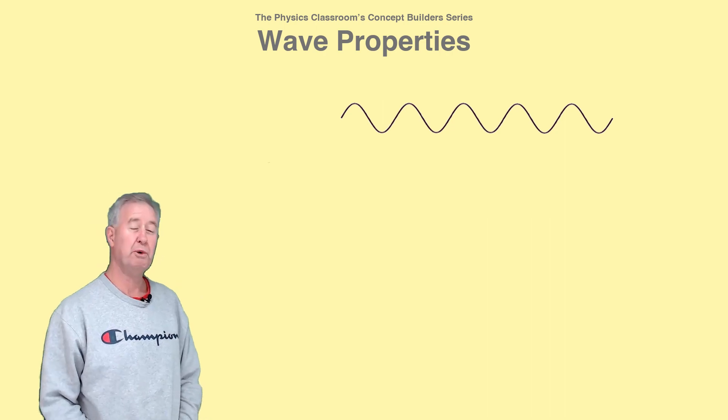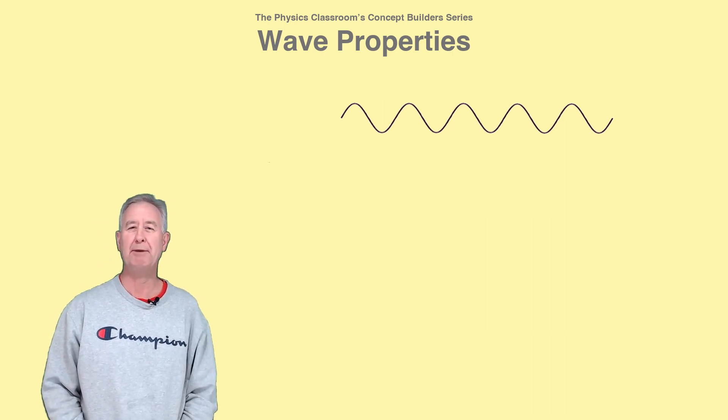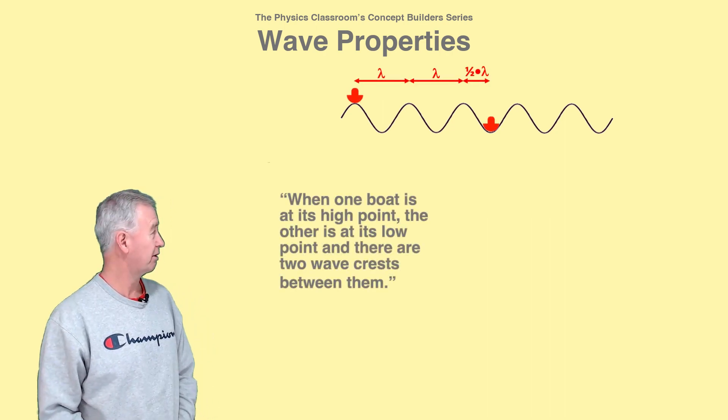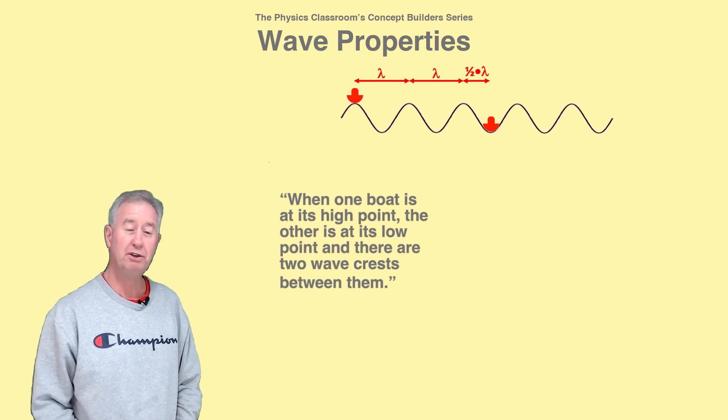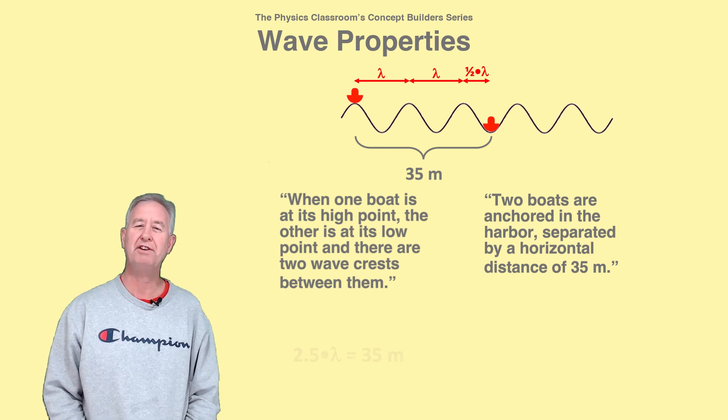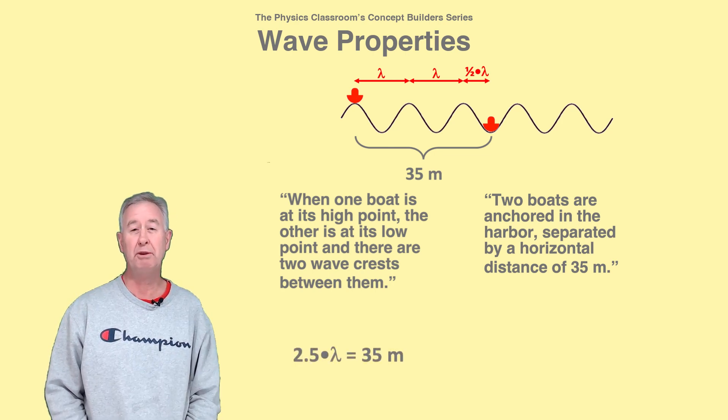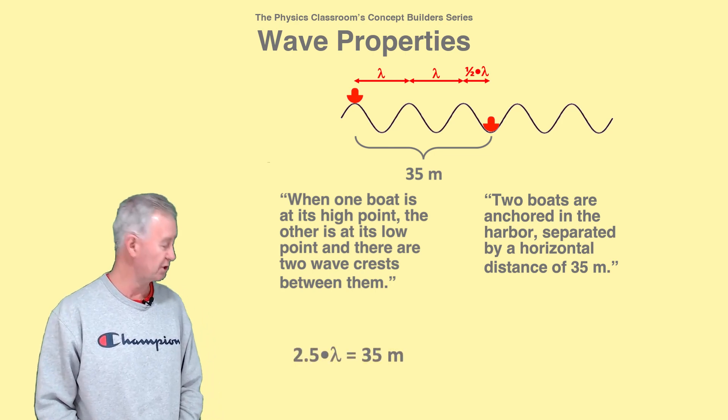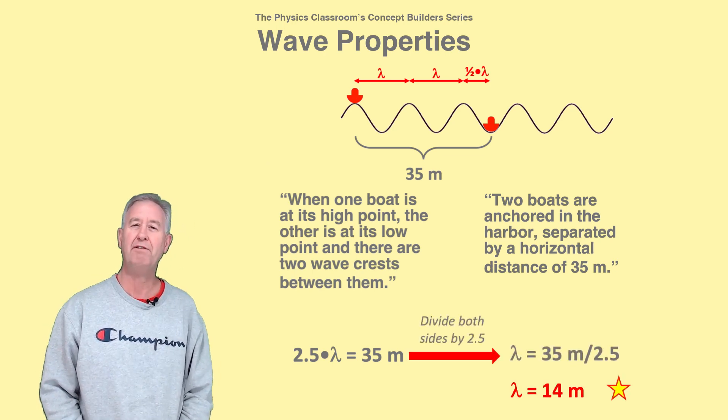Suppose these are water waves and there are two boats bobbing up and down. When one is at a crest, the other is at a trough, and there are two crests between them. They're 35 meters apart. You can use the horizontal distance between boats to determine the wavelength. Write an equation, like this one, and solve for lambda.